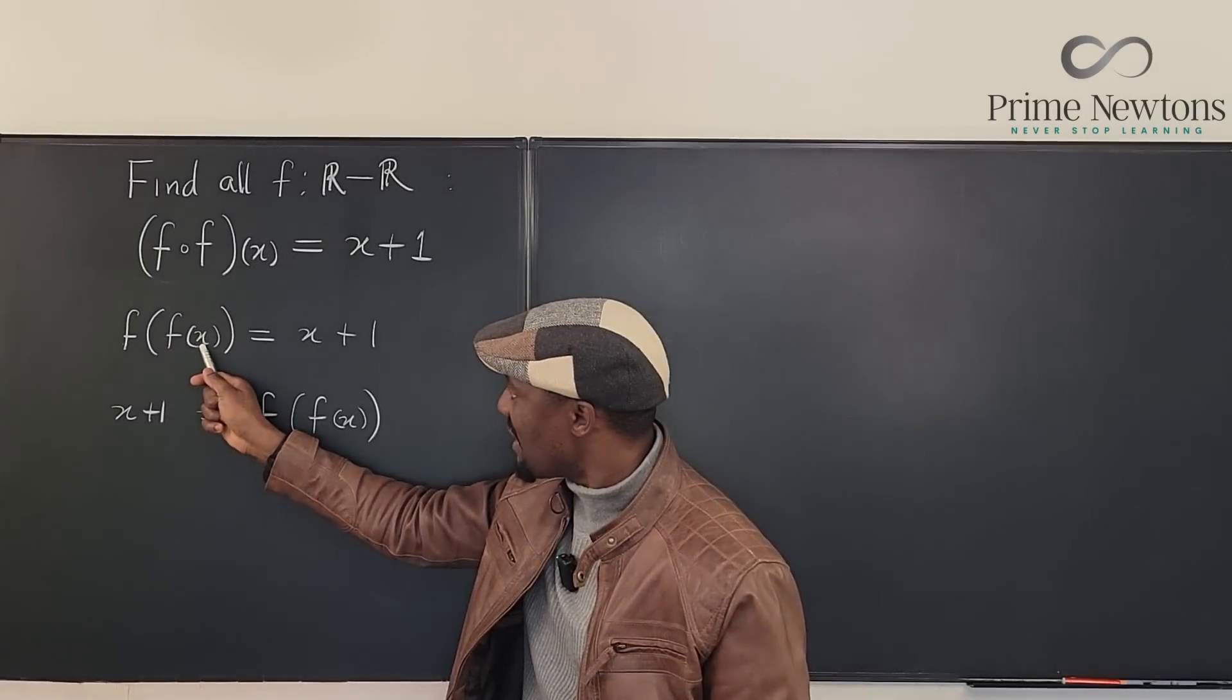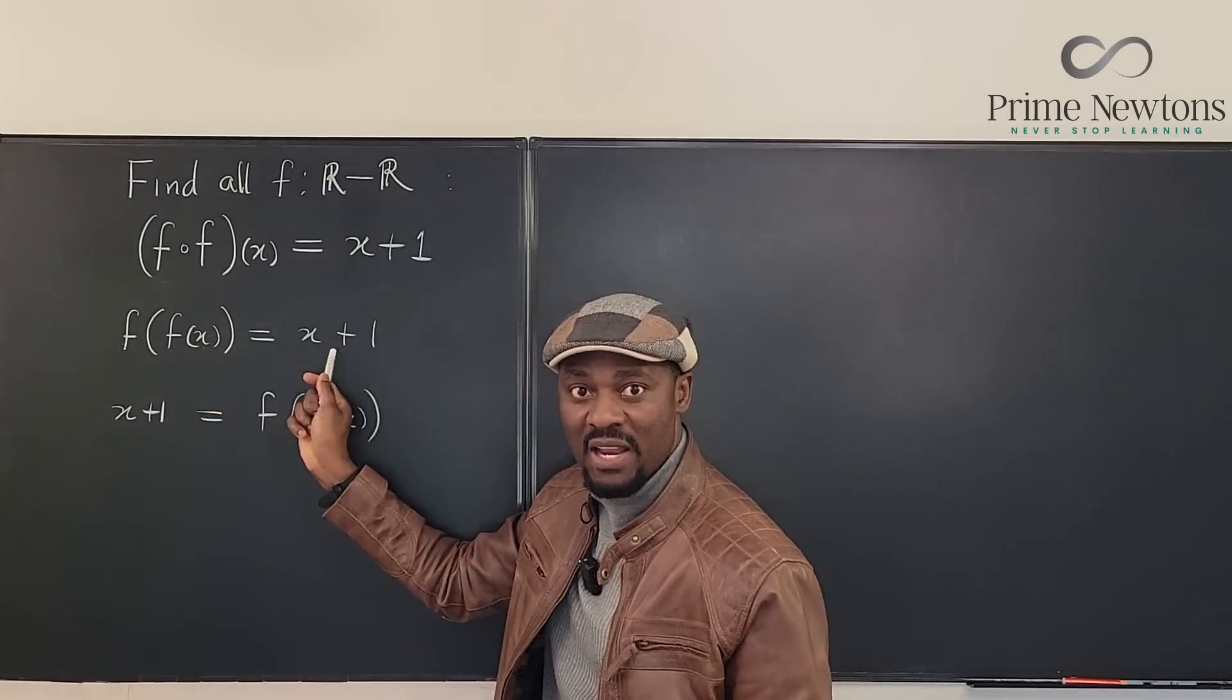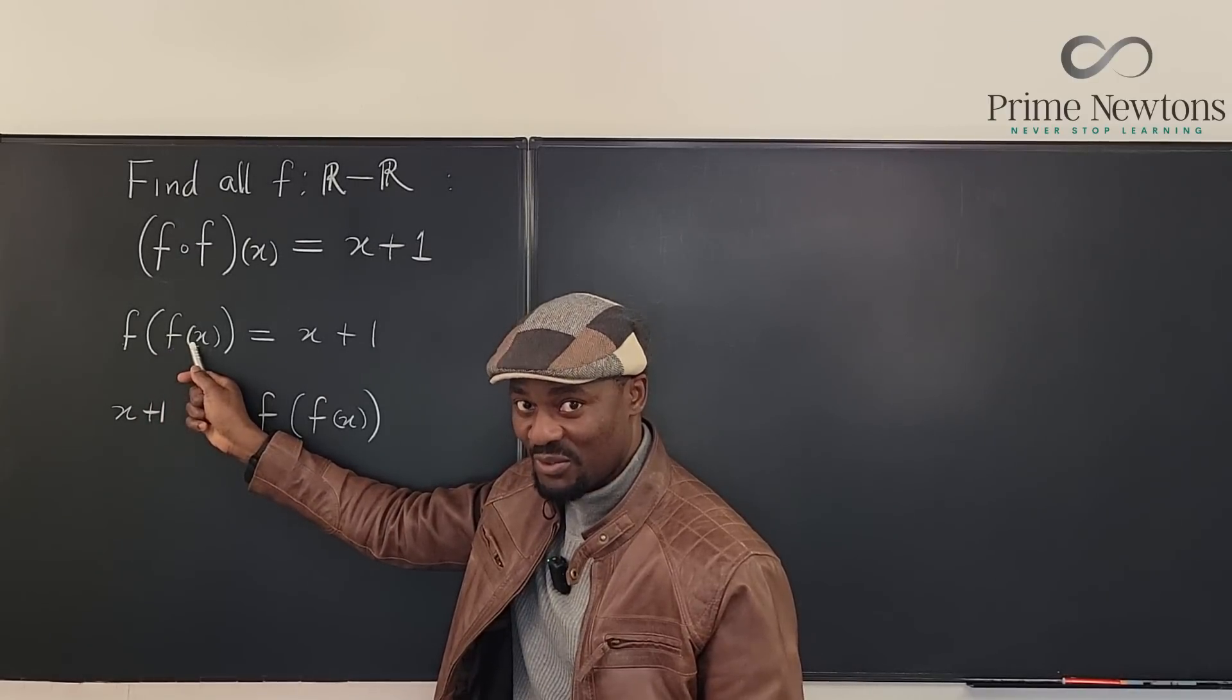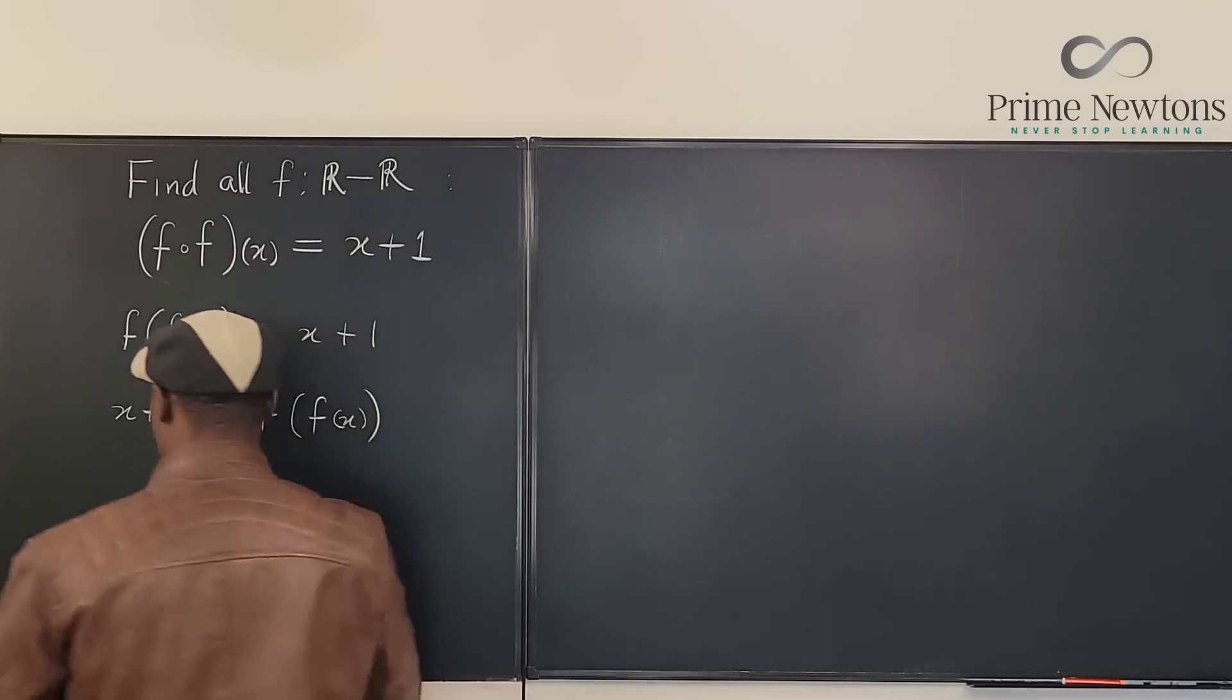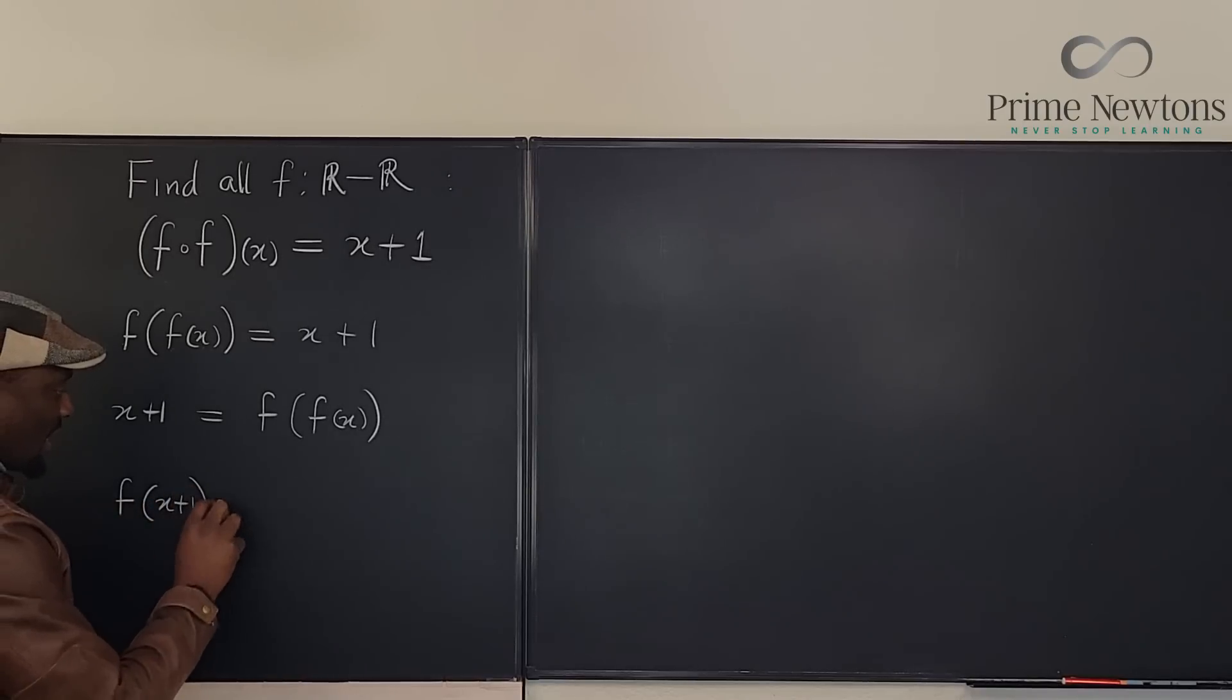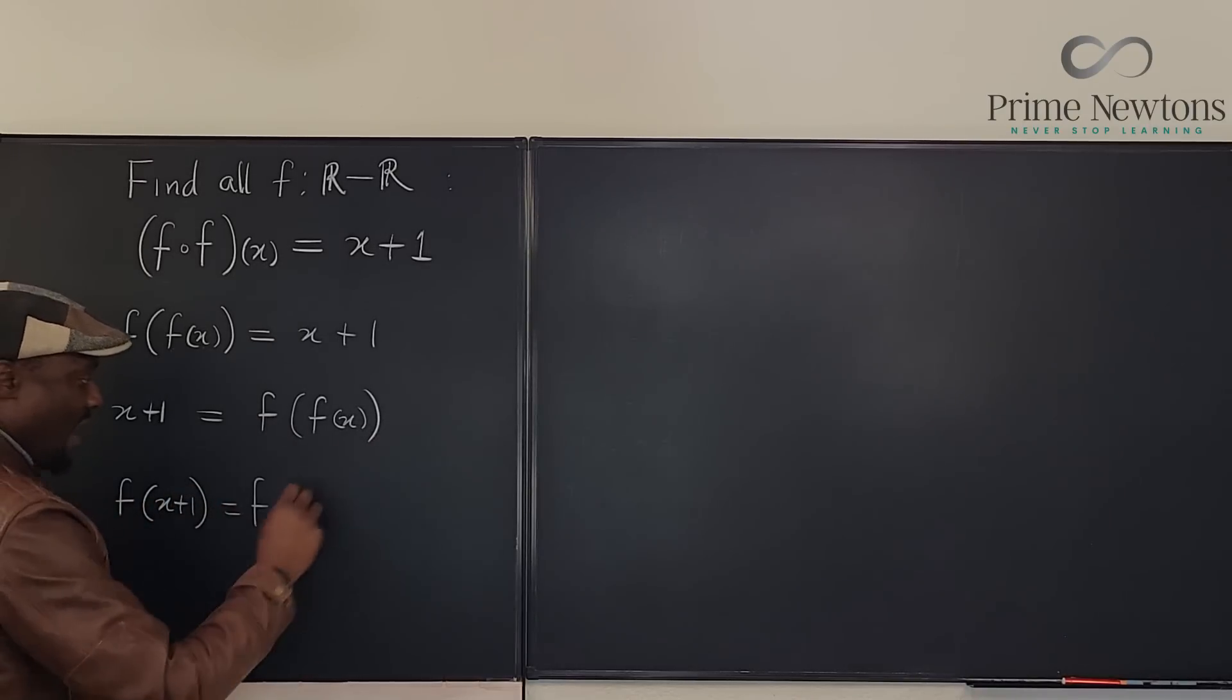So you have x plus one is what's on the right hand side. After two f's, you get x plus one. So what I'm going to do is, I'm going to compose this with itself again, but I'm going to say f of x plus one is going to be f of what I have here, which is f of f of x.